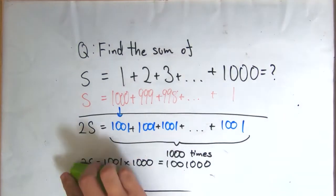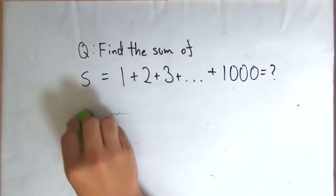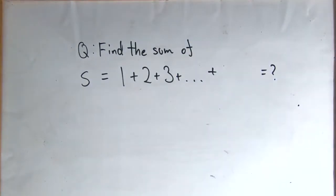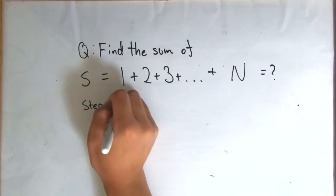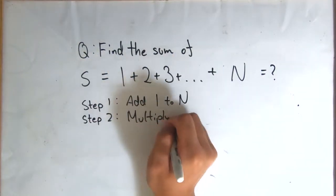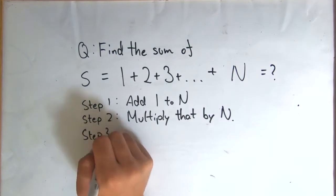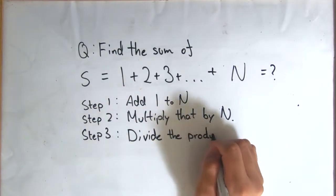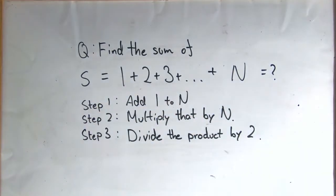This is a much more efficient algorithm, requiring only 3 calculations, given some value of n we want to add to. So if we want to find the sum from 1 through n, we add 1 to n, multiply that number by n, and finally divide by 2, and this will give us the sum.